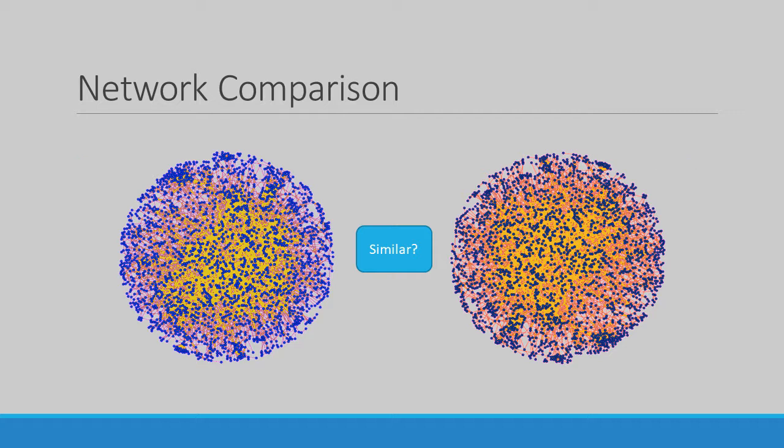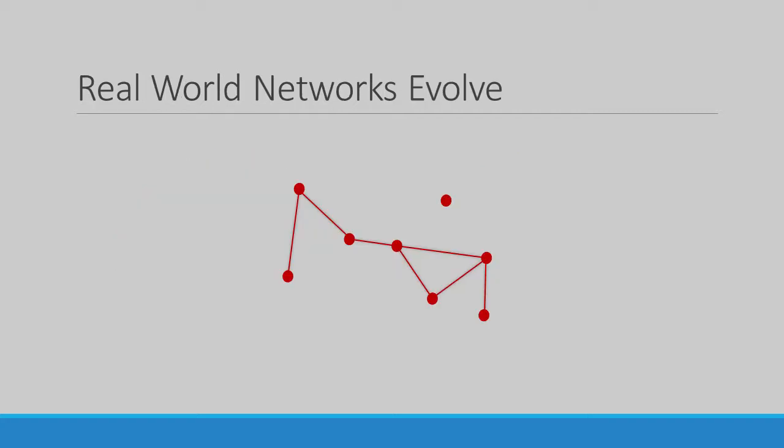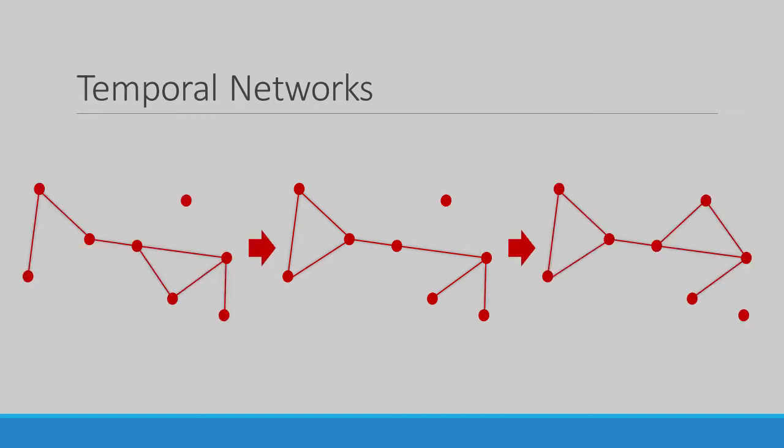Right now, there are several methods that we can use to find the similarity between static networks or networks that don't change over time. However, most real-world networks evolve over time. This means that parts of the graph might appear and disappear as time progresses. We call these evolving networks temporal networks.